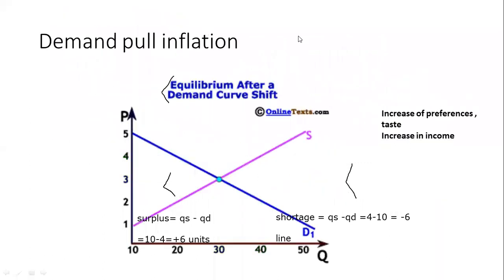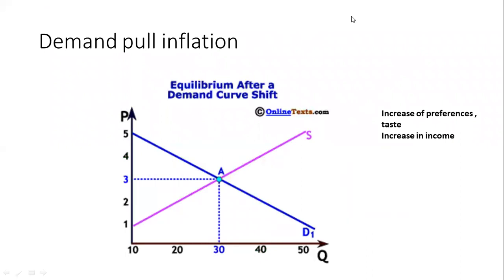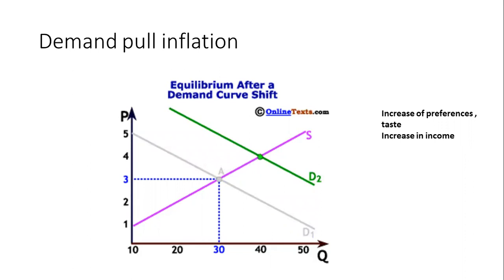If there is an increase in demand, this can be the reason for a crisis. This is called demand-pull inflation. When demand increases, placing both factors together, people find that prices in the market become higher and they are demanding more units. This represents a shift of the demand curve to the right due to increases in preferences or income. If it shifts left, prices decrease rather than increase.